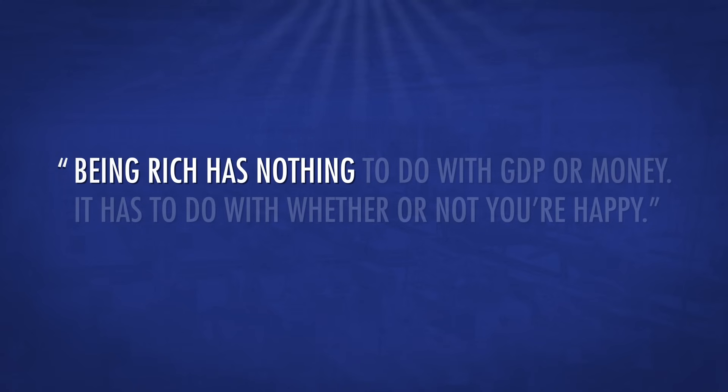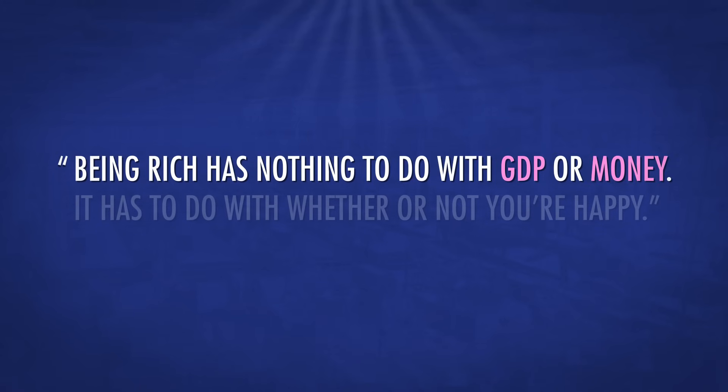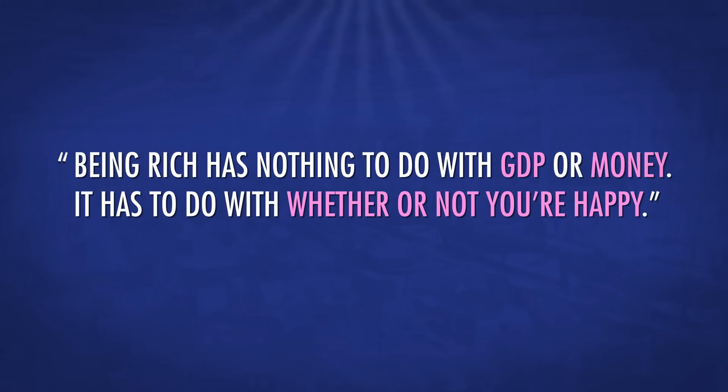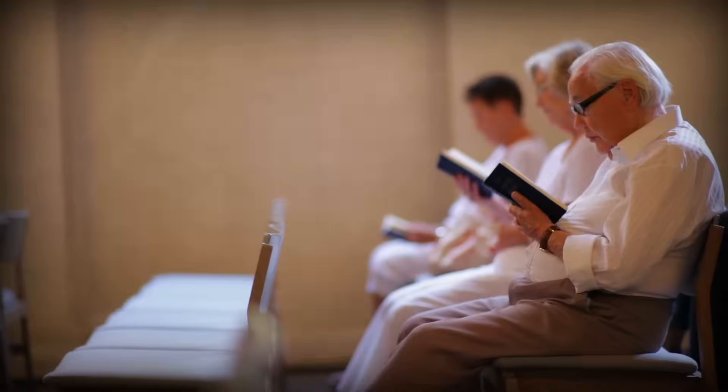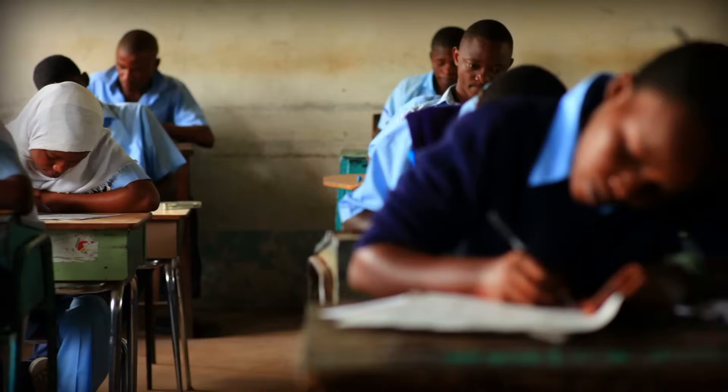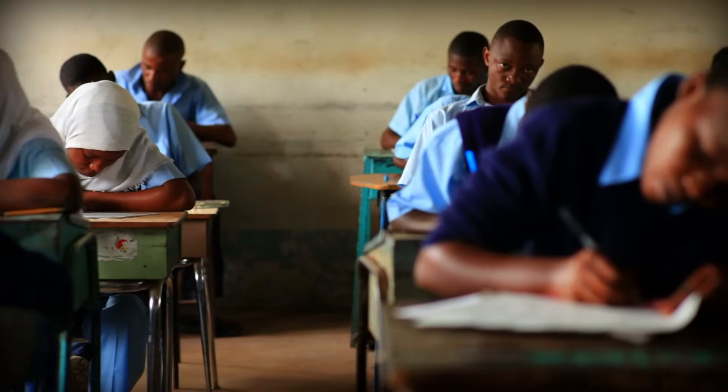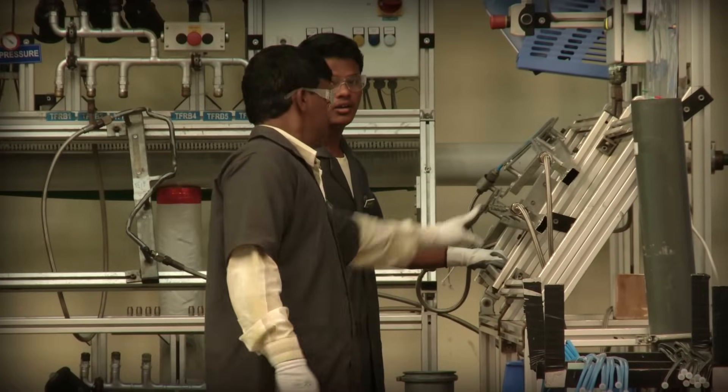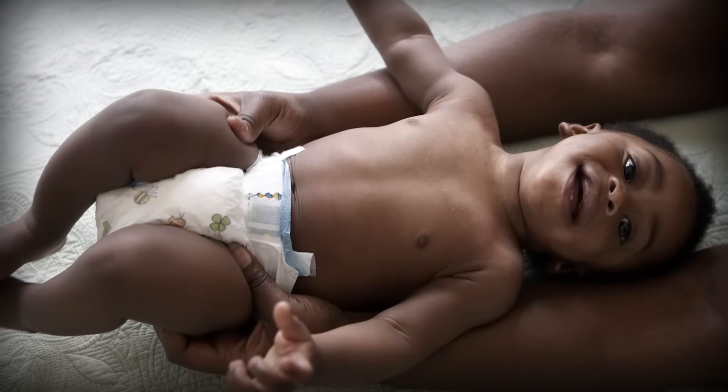Of course, some of you might say being rich has nothing to do with GDP or money — it has to do with whether or not you're happy. Well, money may not buy happiness, but it can prevent a lot of misery. The United Nations Human Development Index, or HDI, measures life expectancy, literacy, education, and quality of life, and ranks countries accordingly. The data shows that countries with a high GDP per capita have far less infant mortality, poverty, and preventable diseases. So economists often use GDP per capita to measure a country's standard of living.